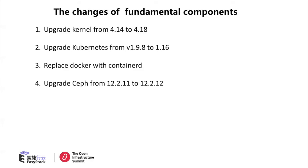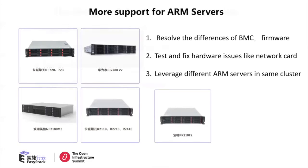I'll introduce the changes to fundamental components. We upgraded the kernel from 4.14 to 4.18. We also upgraded Kubernetes to version 1.16. Another big change is that we replaced Docker with ContainerD. We also upgraded CEPH to a new version. We support more types of ARM servers — there are five types — and the main work was driving differences in BMC and firmware, and also testing and fixing hardware issues like network cuts. We support different ARM servers in the same clusters.